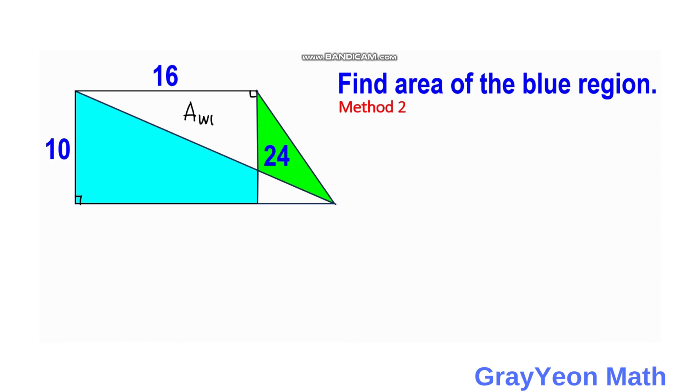For the second method, we are going to consider this white triangle plus the 24 square unit triangle. So the base is actually 16. So area of the white region W1 is equal to one half times the base, which is 16, and the height, which is 10.